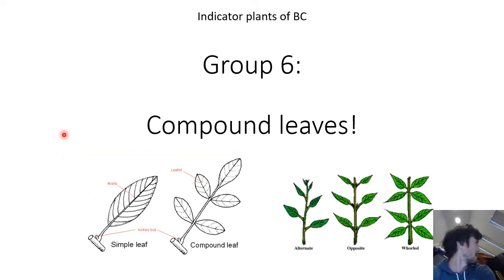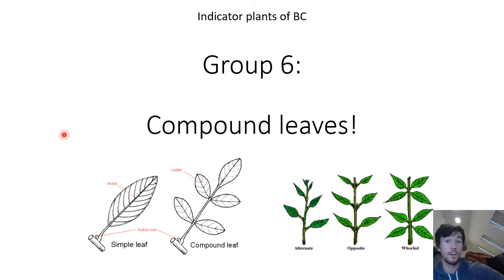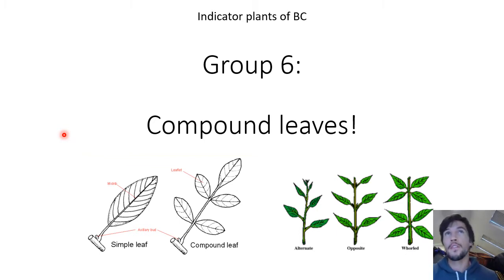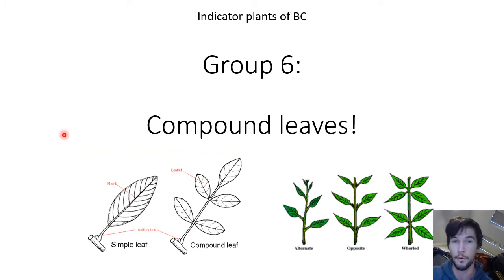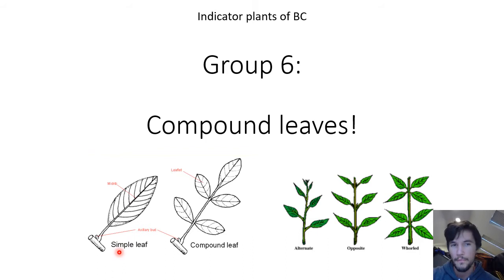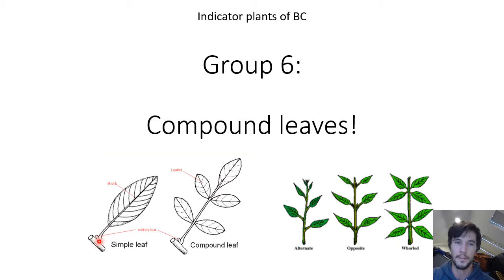We are back in the messy loft studio for another edition of indicator plants of BC, this time group six. We have some compound leaves. This may be review for some of you, but for those who haven't done much botany before, we'll cover what a compound leaf is. In basic terms, a leaf is defined as the thing that does the photosynthesizing, and it stems out from a point where you've got an axillary bud at its attachment point to the stem.